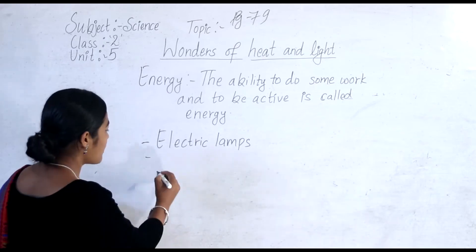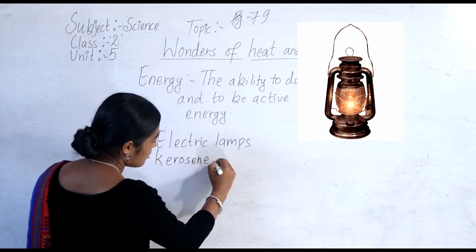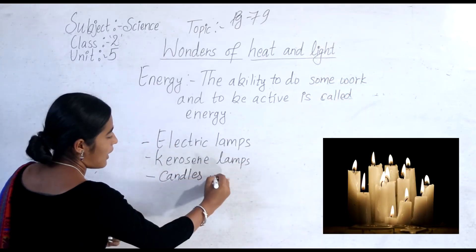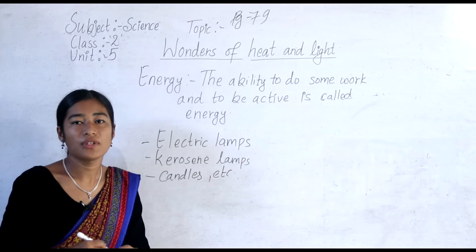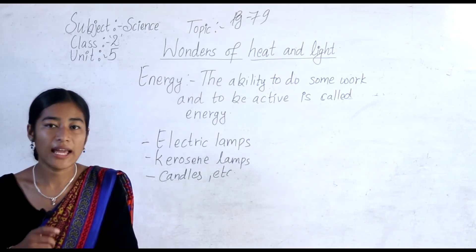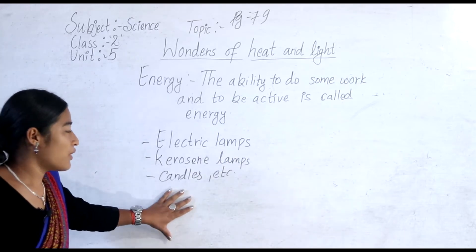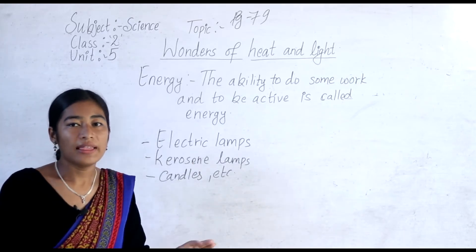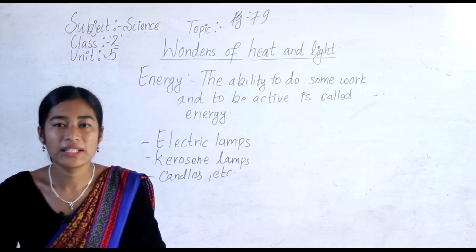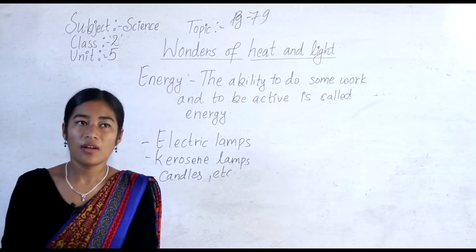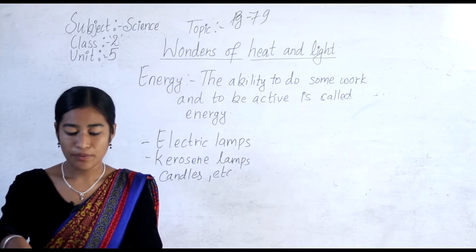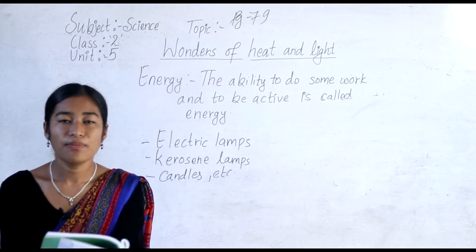Other sources of light include kerosene lamps and candles. These are some sources of light we use at night, and then only we can see things very easily. So light is very important in our life. Plants also need light — both heat and light are important for plants as well as for us.